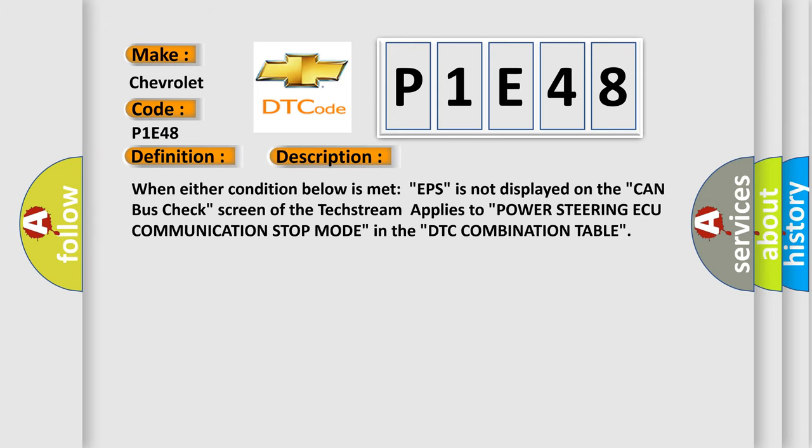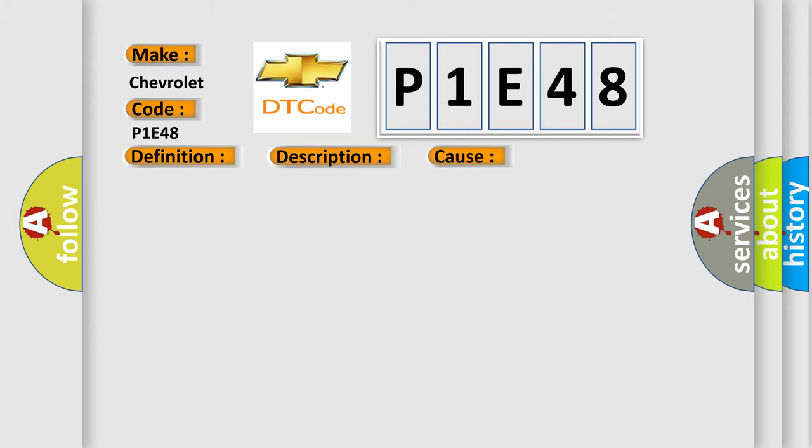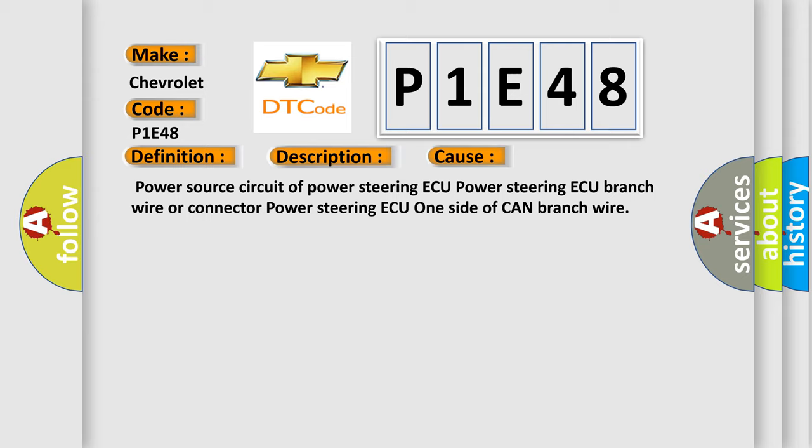When either condition below is met: EPS is not displayed on the CAN bus check screen of the TechStream applies to power steering communication stop mode in the DTC combination table. This diagnostic error occurs most often in these cases: Power source circuit of power steering, power steering branch wire or connector, power steering one side of CAN branch wire.